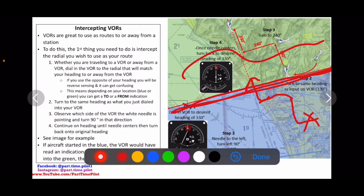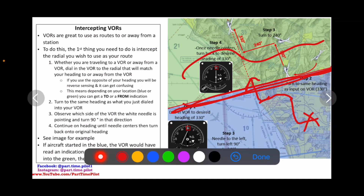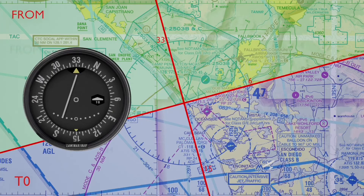Let's see what this looks like in an animation so that you can get a grasp of it visually — how you intercept these radials. Let's see a visualization of an aircraft intercepting and tracking a VOR radial.